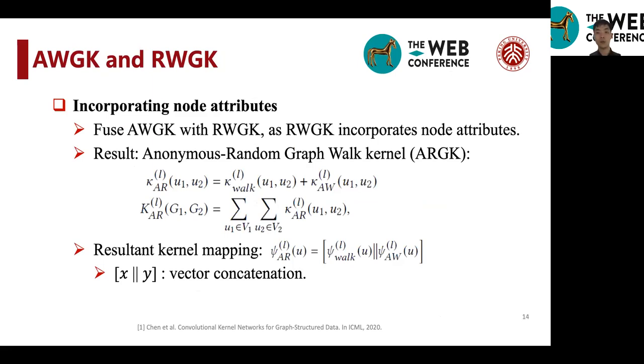And then we combine anonymous walk kernels with random walk kernels. Because random walk kernels incorporate node attributes, which are very important in classifying graphs and also classifying nodes.